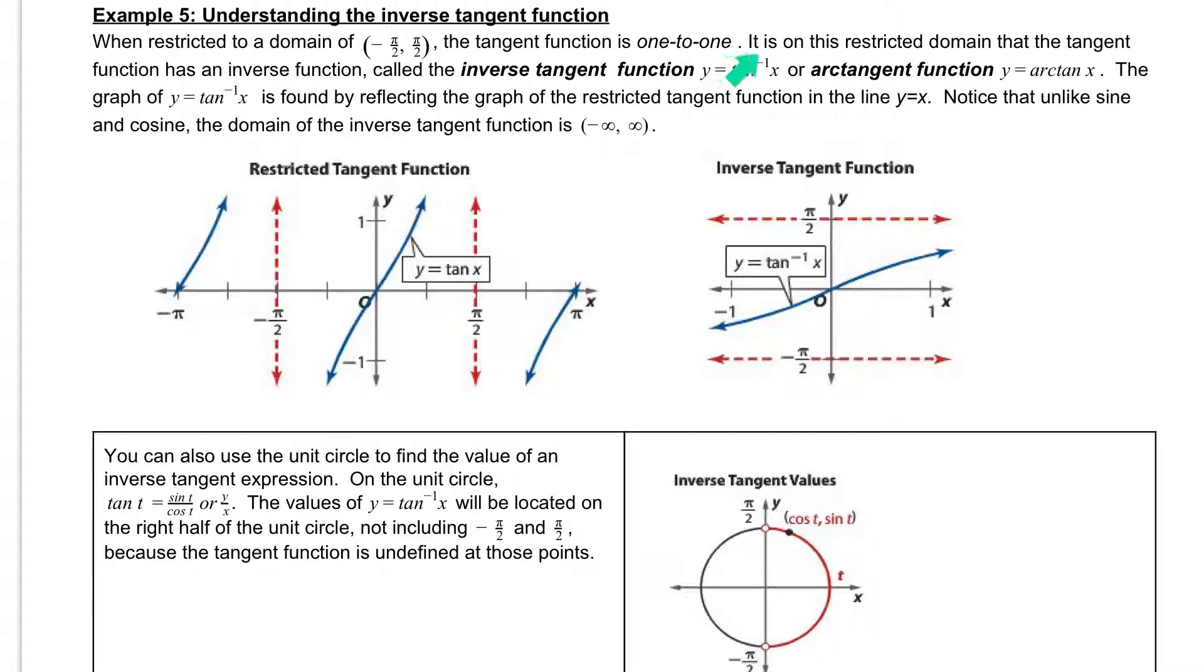The tangent function is 1 to 1. It is on the restricted domain that the tangent function has an inverse function, called the inverse tangent function, notated by y equals tan to the negative 1 of x, or arctangent function, y equals the arctan of x.